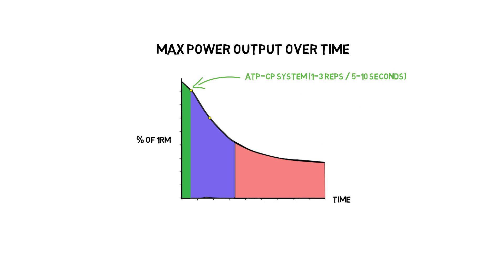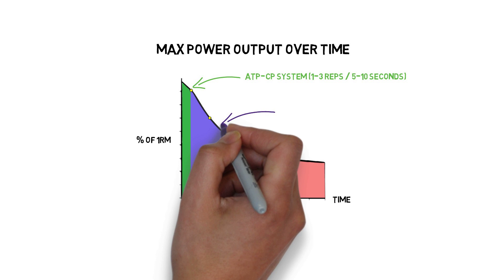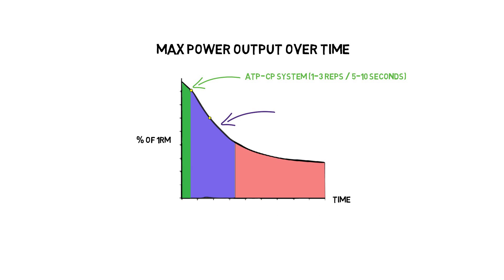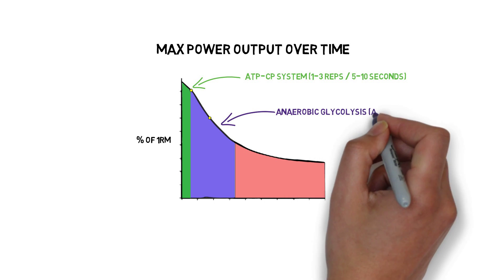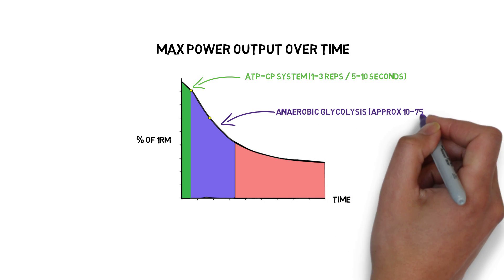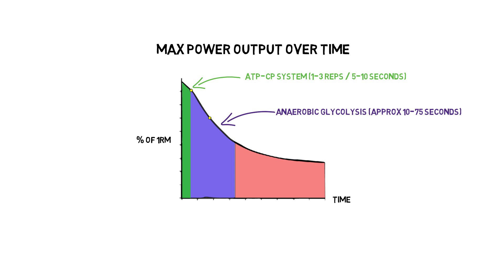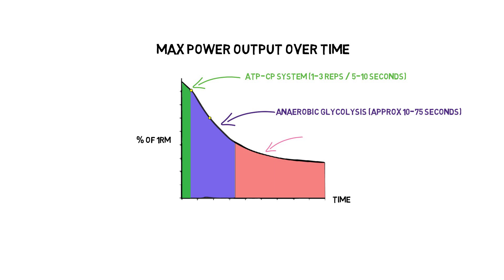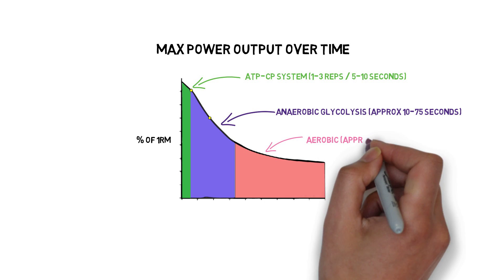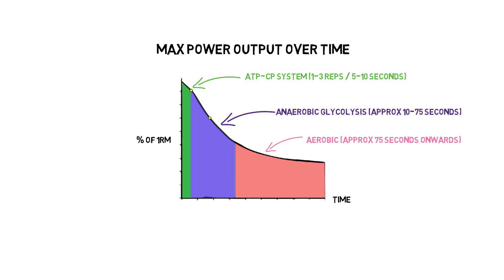After those first few seconds are up, your body switches to glycolysis as the main energy source. This is from about 10 seconds to 75 seconds. During this time, the ATP-CP system is still helping out a bit, but glycolysis, or the breakdown of glycogen, is primarily where you're getting your ATP from. After about 75 seconds, the power output slowly falls until it is the weaker, slow drip aerobic system, which is giving the majority of the power available.